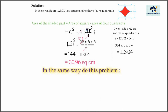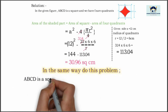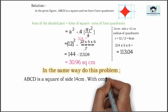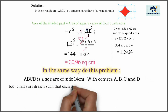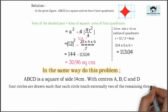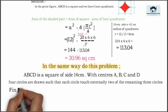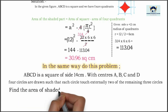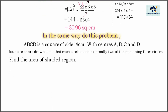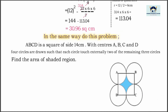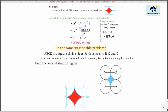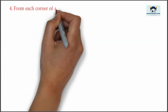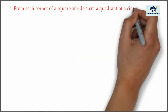In the same way, do these problems. ABCD is a square of side 14 centimeter. With centers A, B, C, and D, four circles are drawn such that each circle touches externally two of the remaining three circles. Find the area of the shaded region. See the figure carefully — just as we solved the same problem, inside the square we have four quadrants. Try this problem.